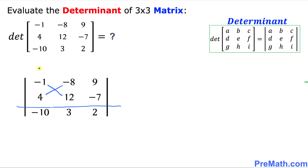We are going to crisscross these numbers. Negative 1 times 12 is going to be negative 12. Then I put a minus sign, and the other way around: negative 8 times 4 is negative 32. Simplifying: negative 12, and negative minus negative becomes positive 32, giving us 20. So this 20 goes on the opposite side over here.